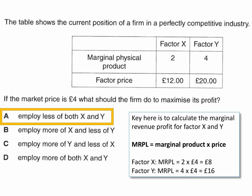Marginal revenue product is the marginal physical product multiplied by the price of the output that the factors themselves produce. So if we take Factor X, for example, the marginal physical product is 2. We get £4 per unit from each unit — that gives a marginal revenue product of £8. Factor Y has a higher marginal product of 4, and multiplying by £4 per unit again gives a marginal revenue product of £16.